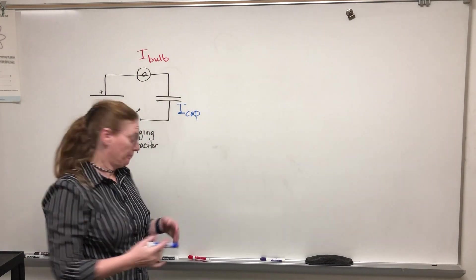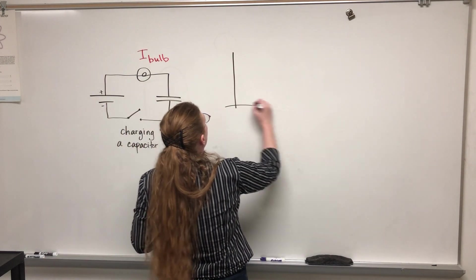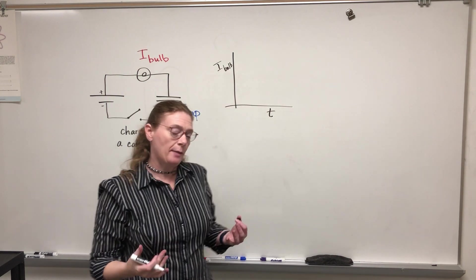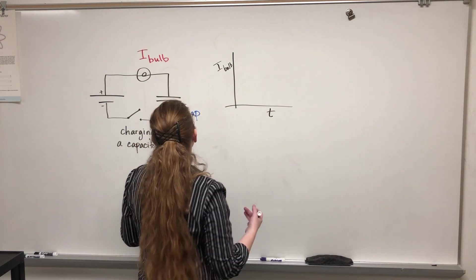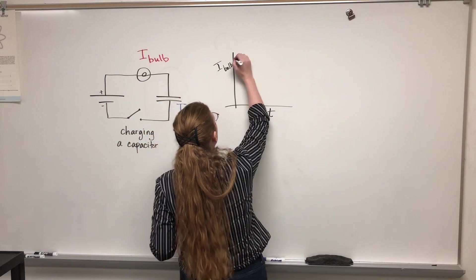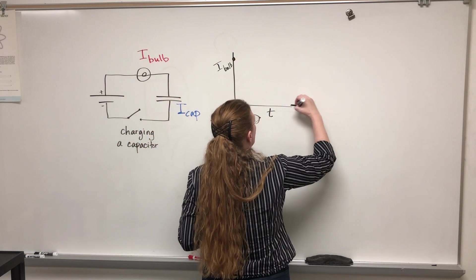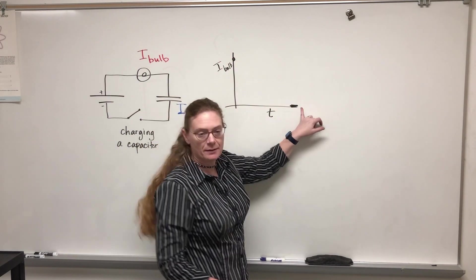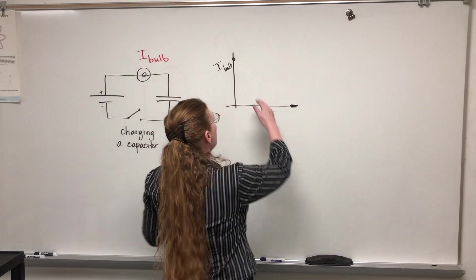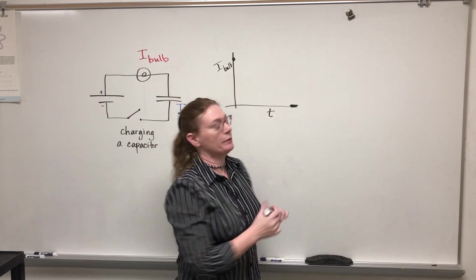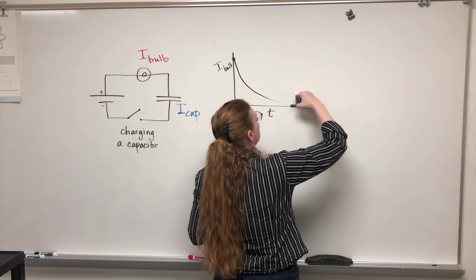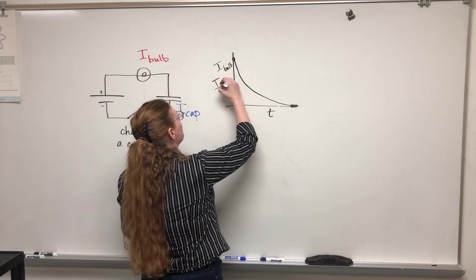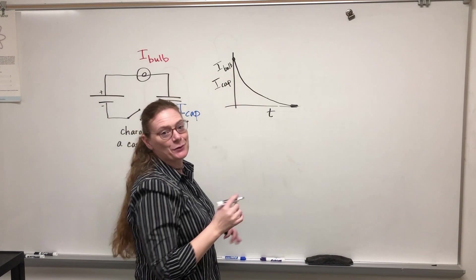So what is that current like? For a current-versus-time graph of the bulb: as time goes on, we know the bulb starts bright and ends out, so we start big and end at zero. The current doesn't go down linearly — it turns out to be an exponential function, so we have this kind of downward exponential curve for the current through the bulb. And that must be the current through the capacitor too, because this is a series circuit.